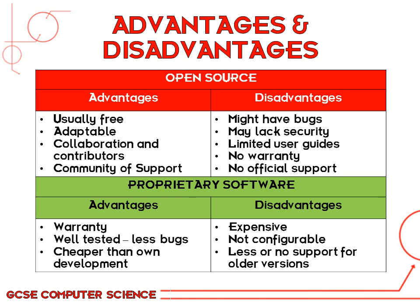The disadvantages of open source software include that there might be bugs in the software that have not been picked up or fixed. It may also lack security — there could be certain errors or glitches in the code that could be hacked.